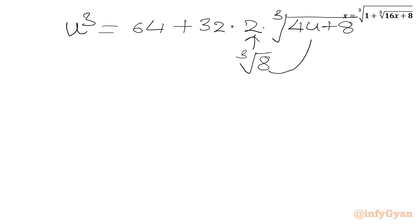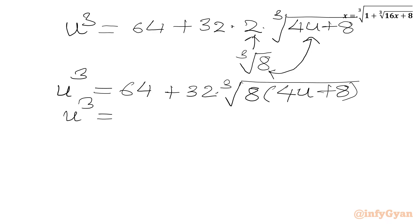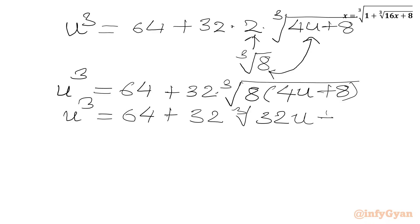We can write cube root of 8, and then we will club these two radicands. So we need to multiply 4u plus 8 with 8 in the cube root. So we will be writing u cubed equal to 64 plus 32 times cube root of 8 times (4u plus 8). Note that 8 times 8 times 8 is 64.